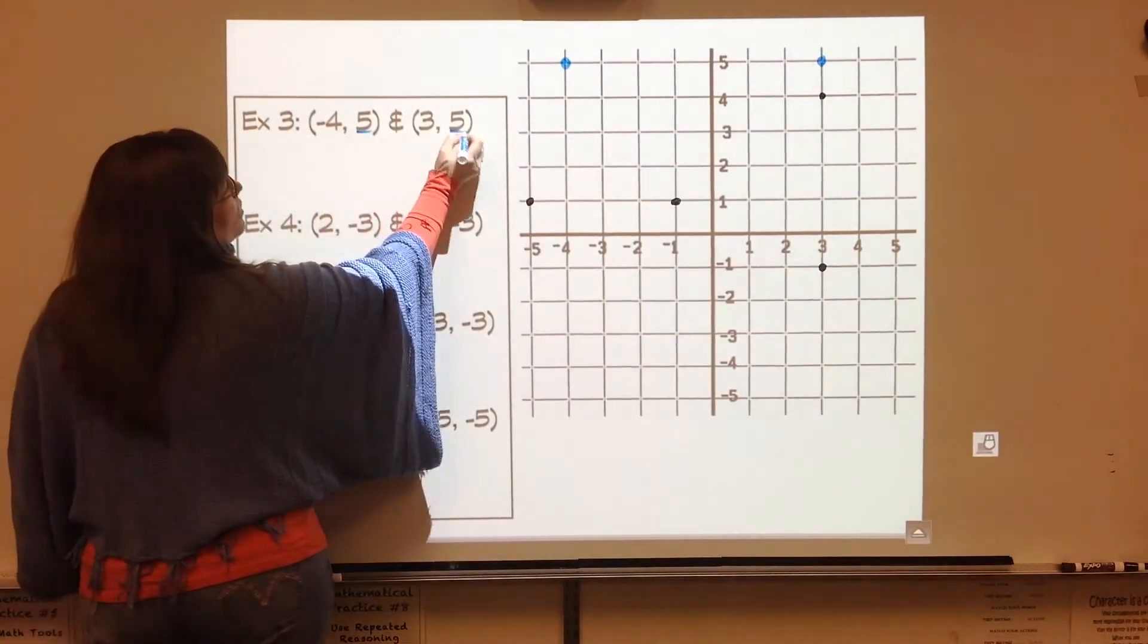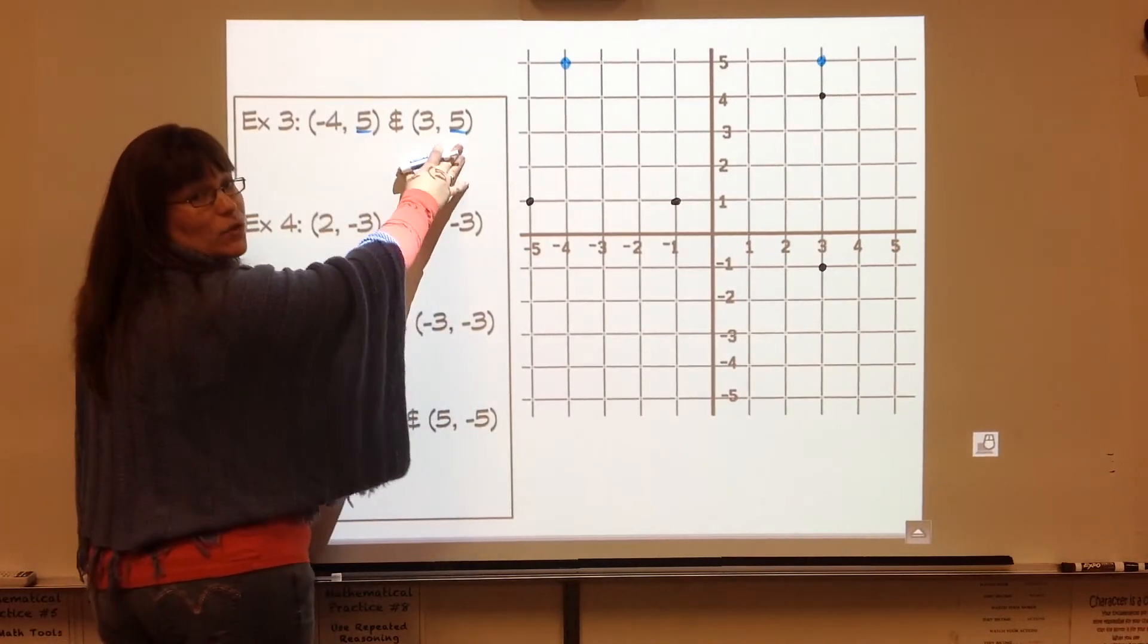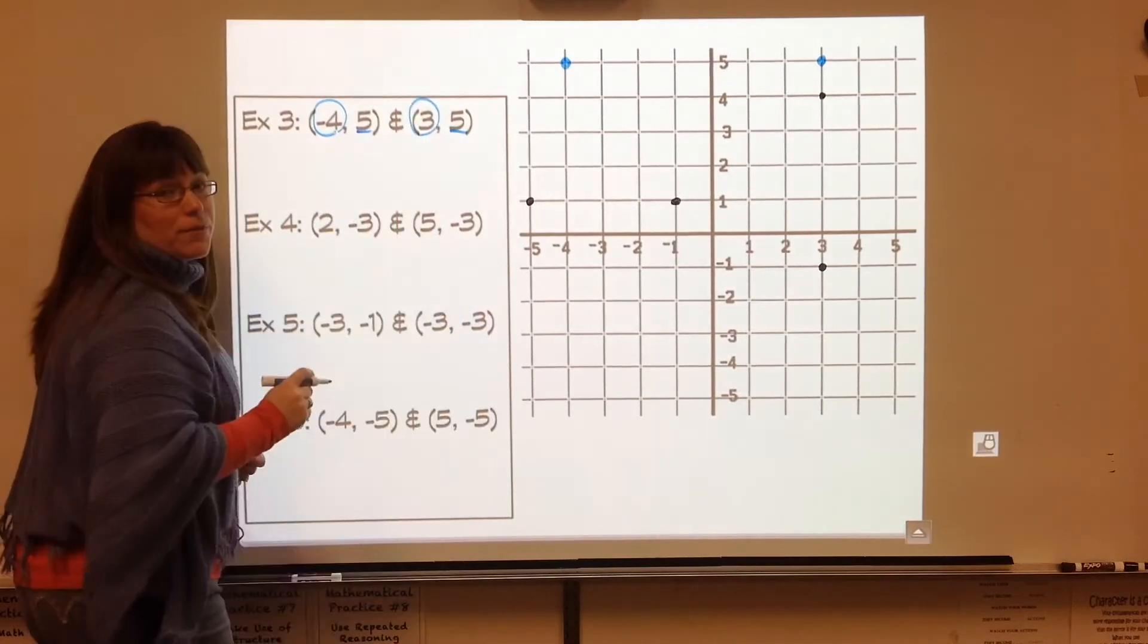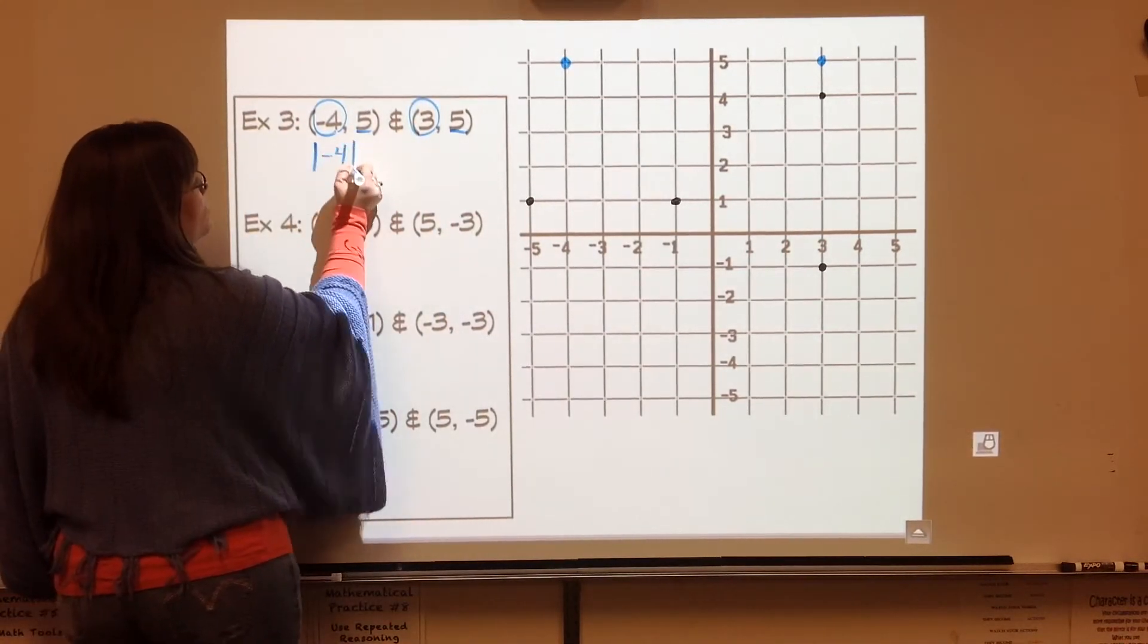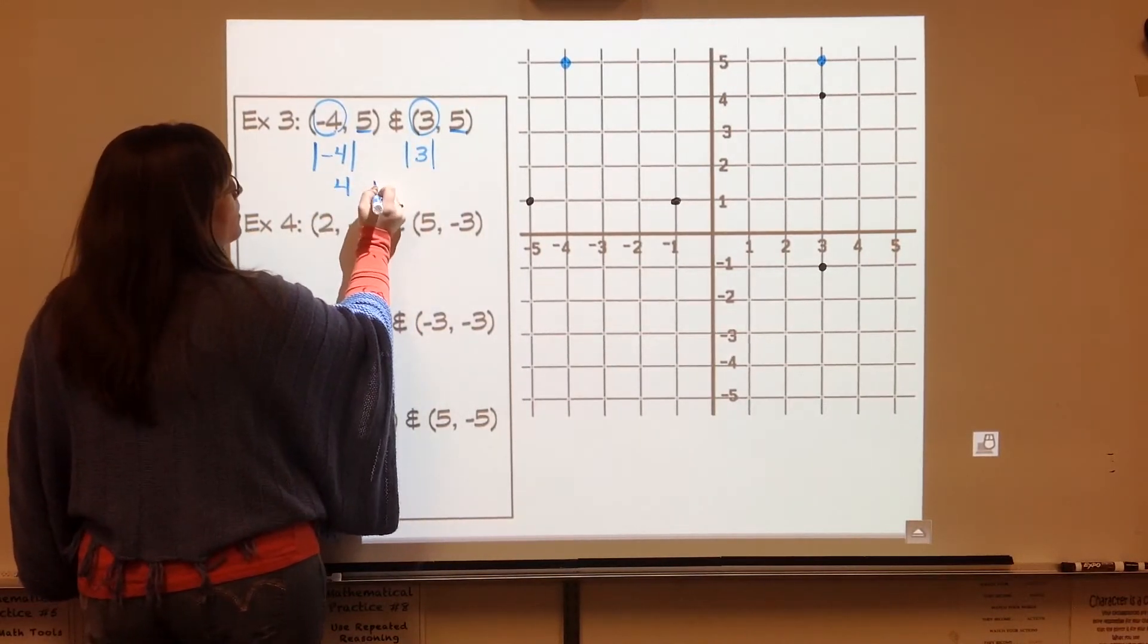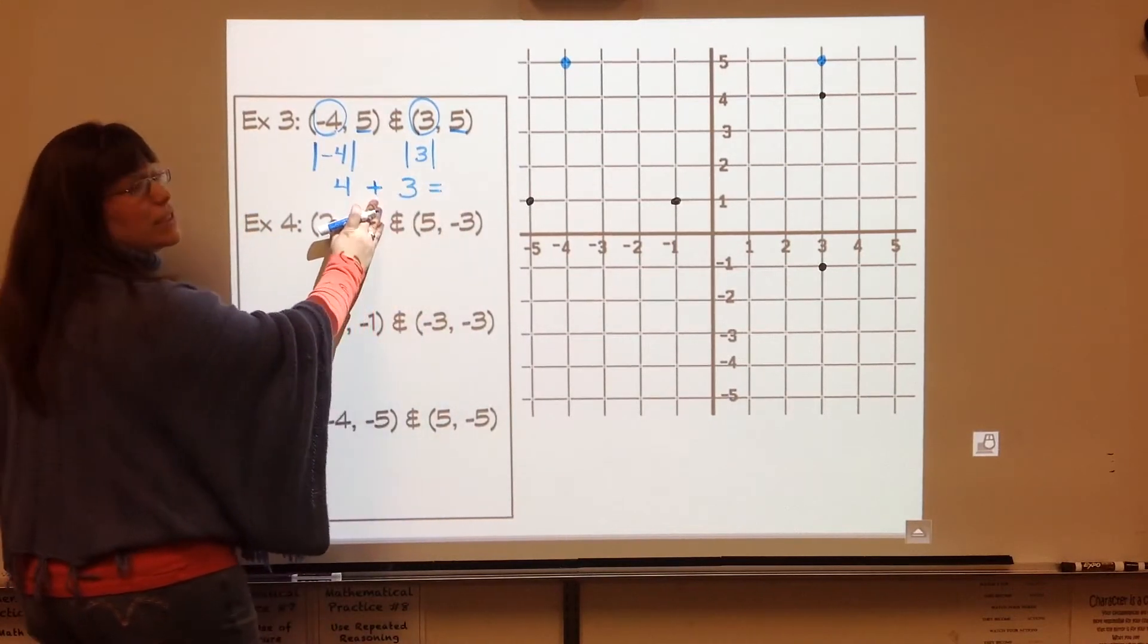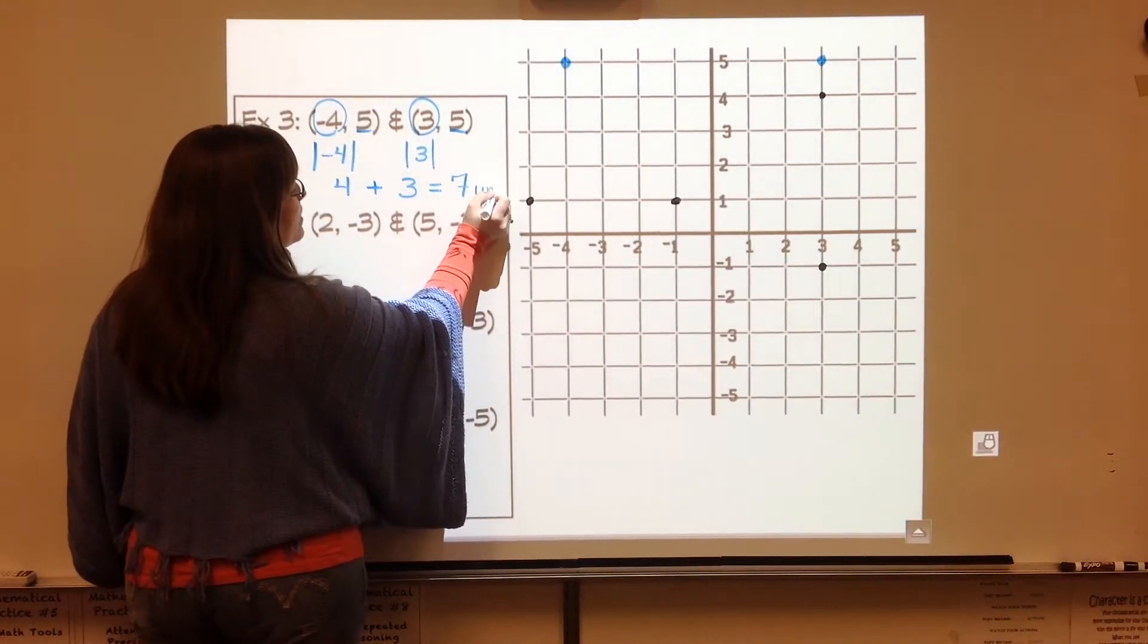But I also can do the absolute value trick. The five is the same, so I don't have to do anything with that. I'm going to take the negative four and the three, the x value. I'm going to take the absolute value of each number. I have four and a three and because they're in different quadrants, I'm going to add them and I get my seven units.